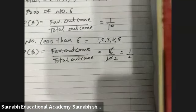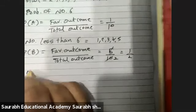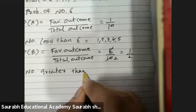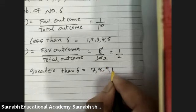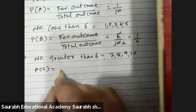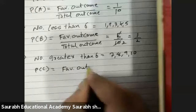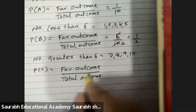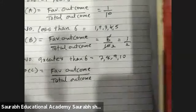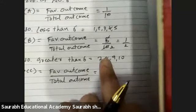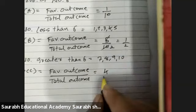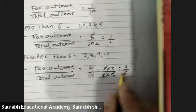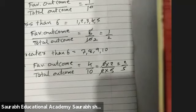Third: getting a number greater than 6. Numbers greater than 6 are 7, 8, 9, 10. So P of C equals favorable outcome upon total outcome — 4 numbers greater than 6 upon 10. Reducing, the final answer is 2 upon 5.